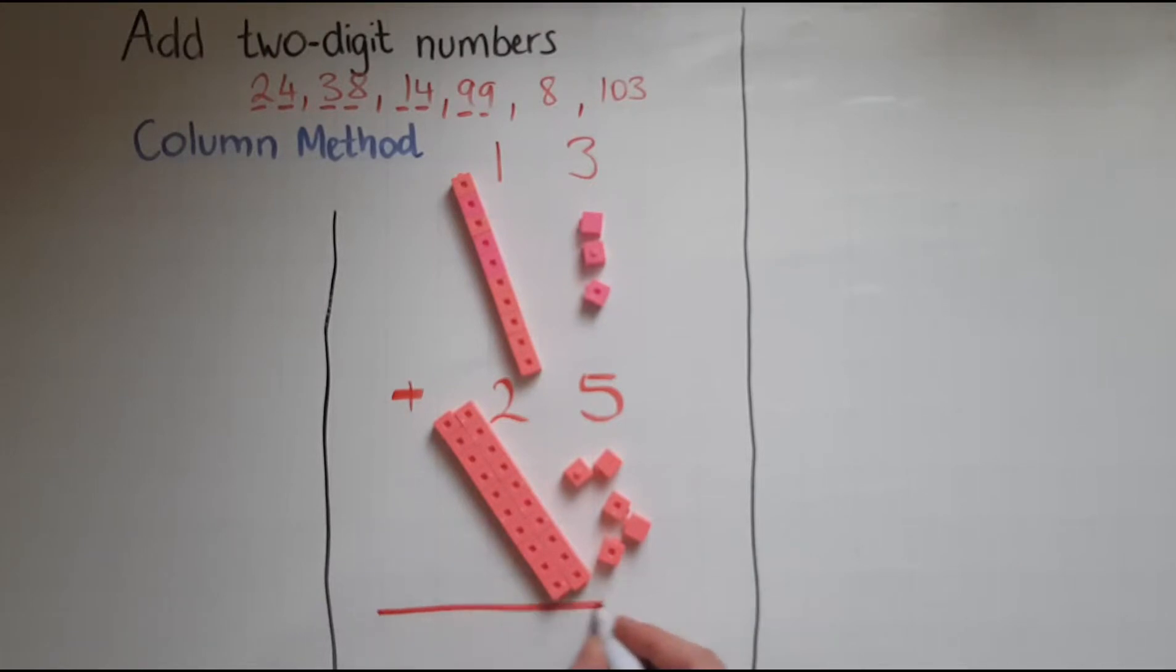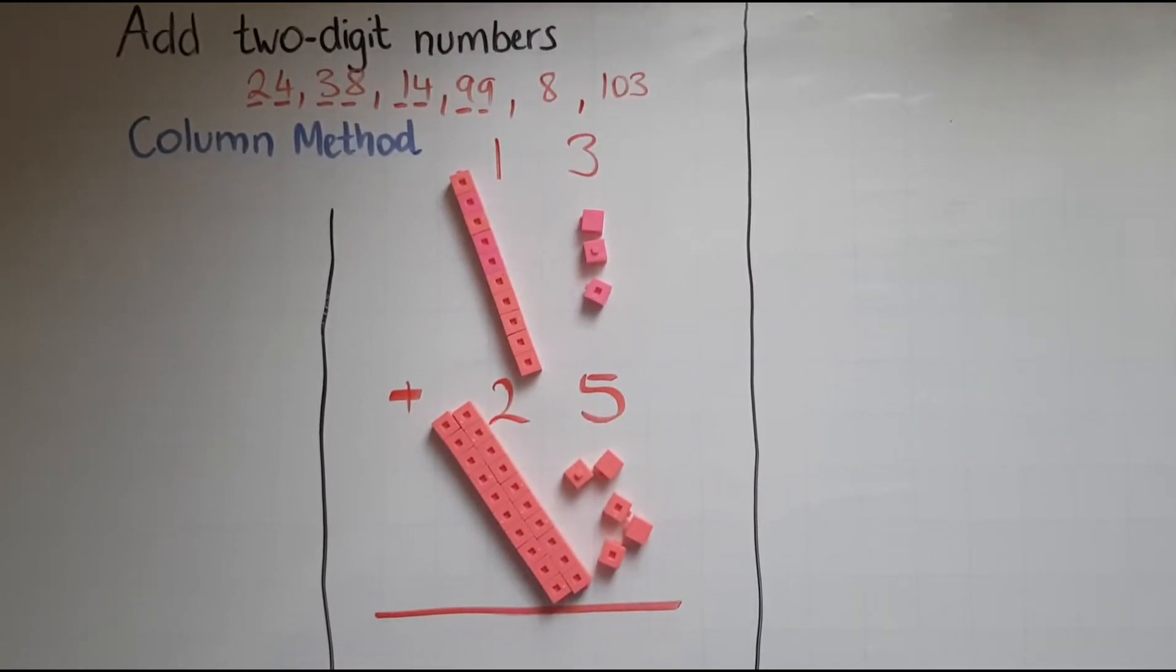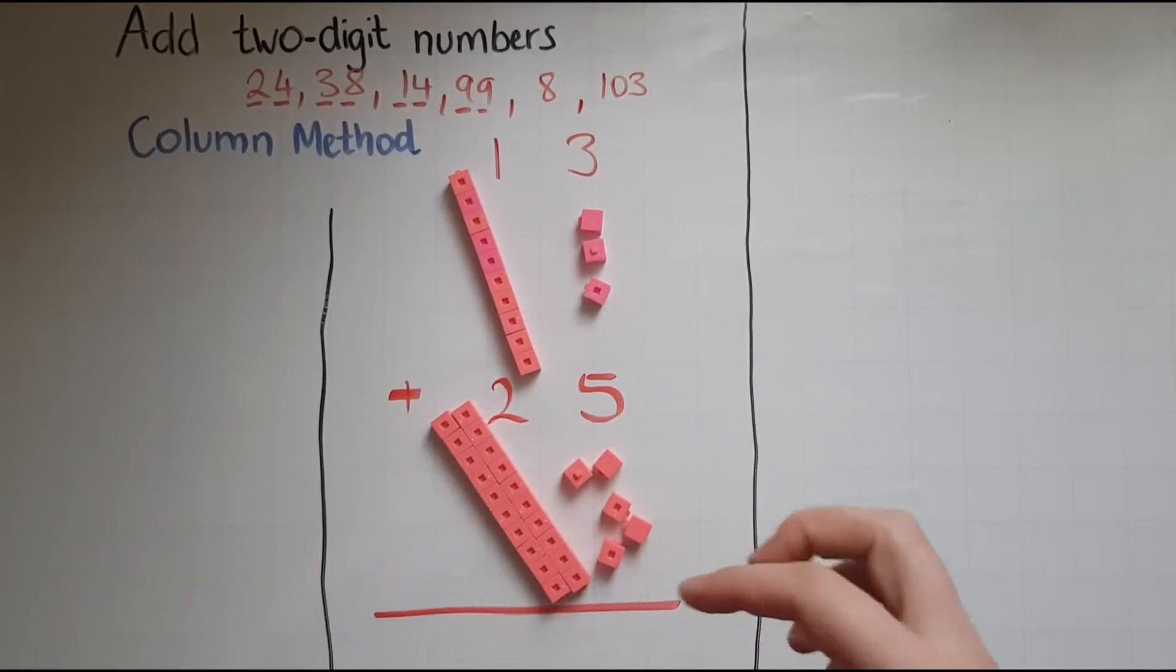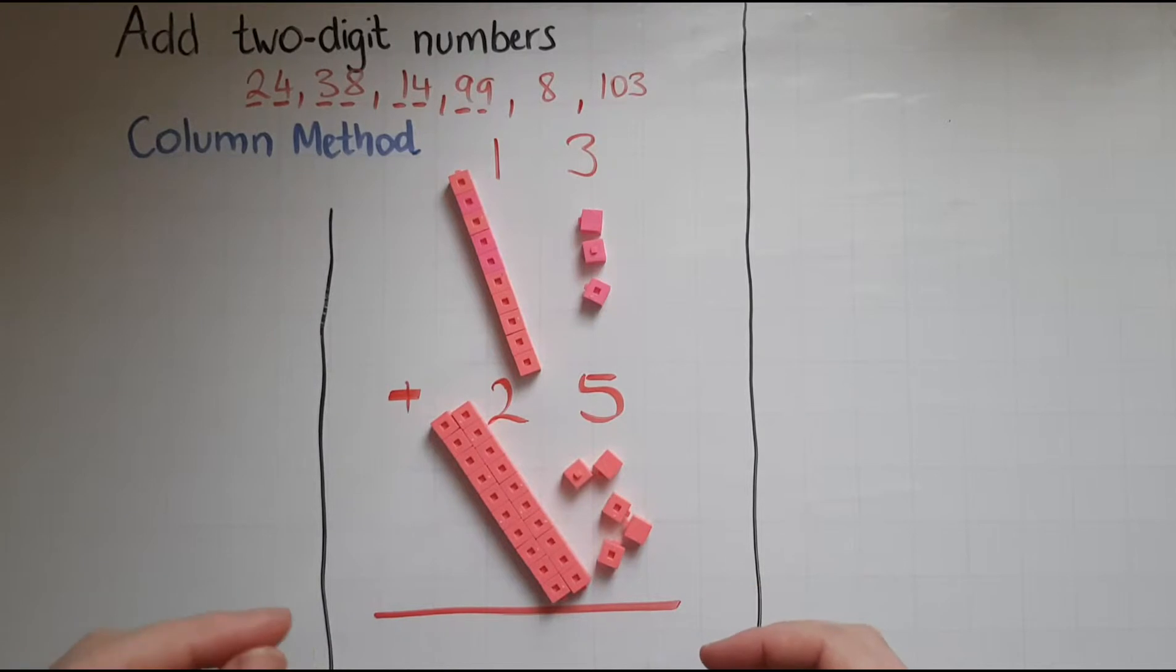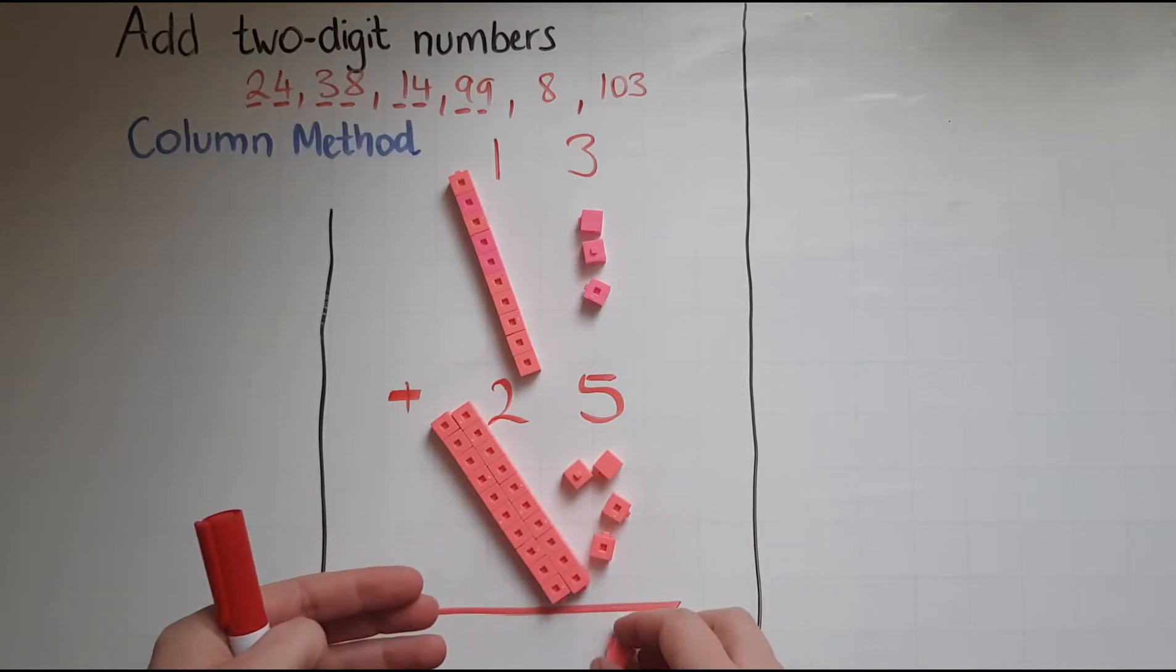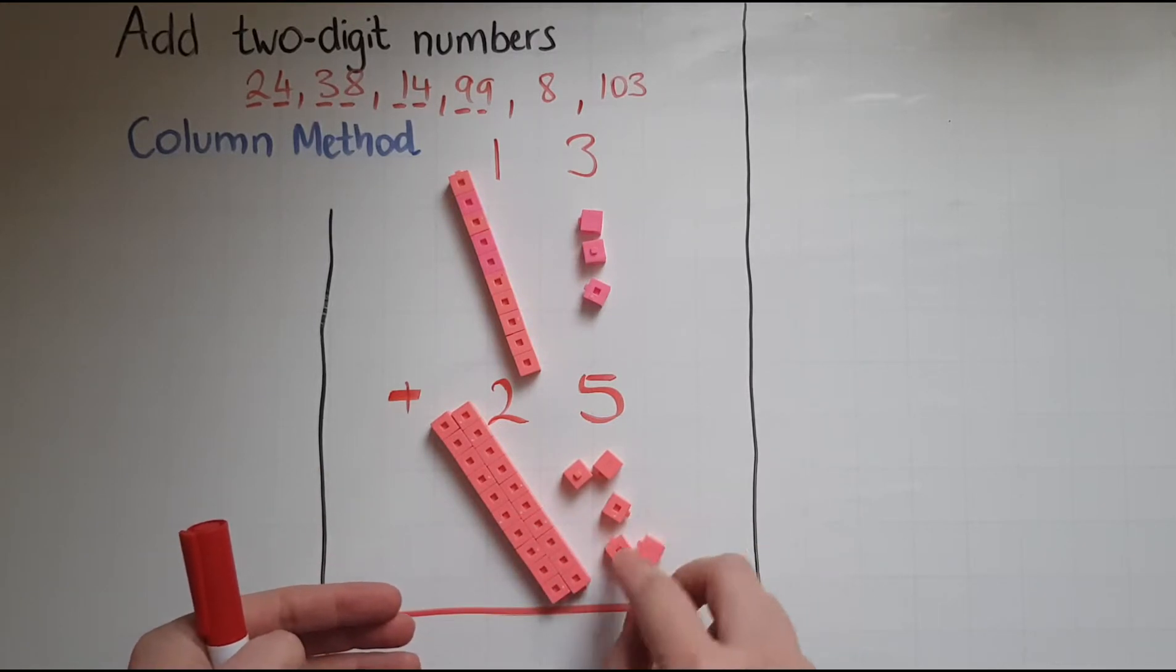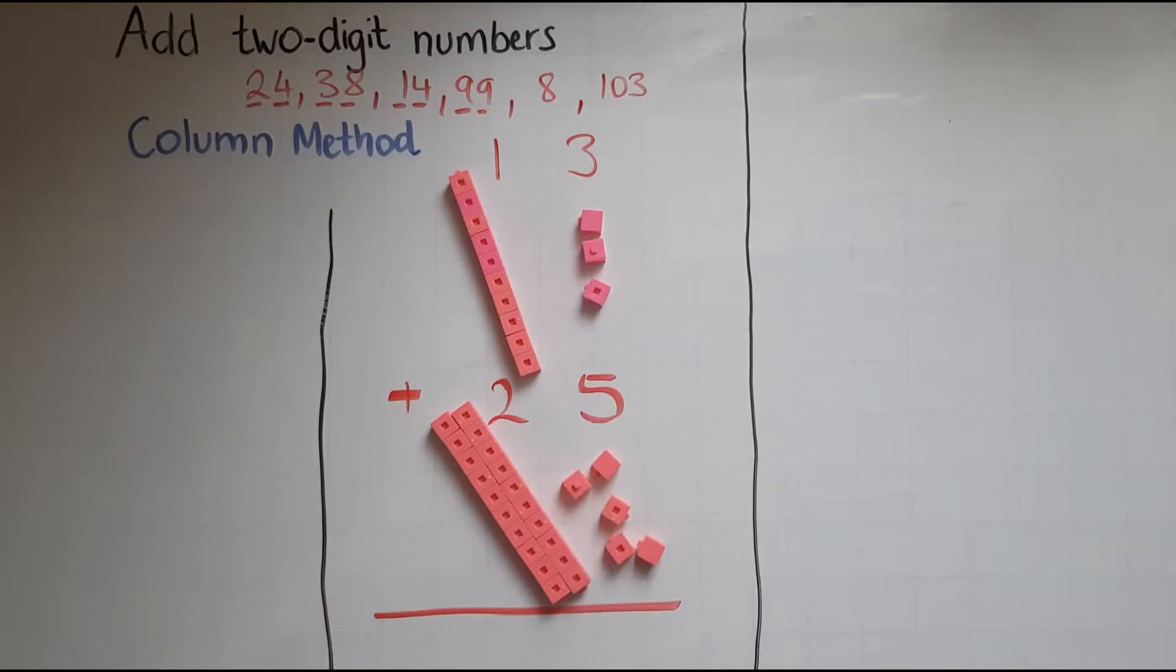How much or what does this add to? So I'll start adding the cubes, the units, because I might be able to make a block of 10 with them and transfer them to the tens. So let's see what do I have. When I put these together I've got 1, 2, 3, 4, 5, 6, 7, 8, so that makes 8.